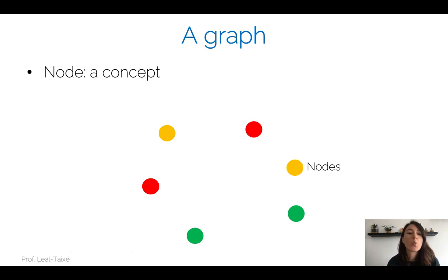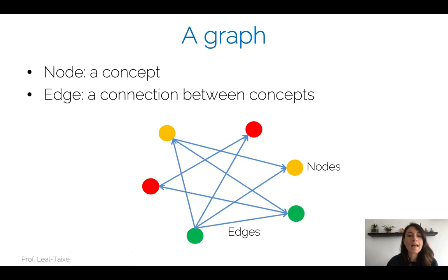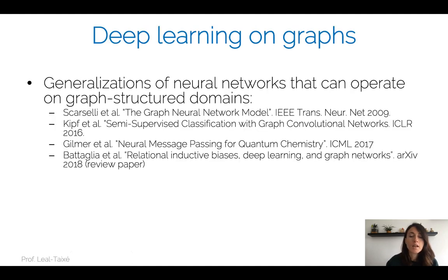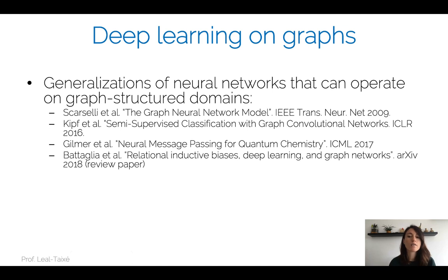Let's start by defining what a graph is. A graph contains nodes and edges. Nodes represent concepts — for example, friends in your social network — and edges represent the connections between these concepts, such as whether you are actually friends with another node representing another person. There has been a lot of work on deep learning on graphs, which are essentially generalizations of neural networks that can operate on these domains with a graph structure.